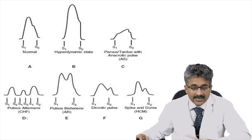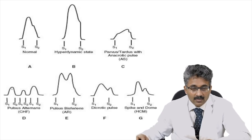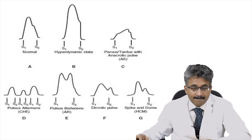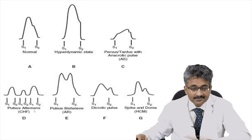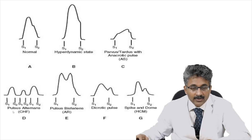In the next diagram, there is alternating one big pulse and one small pulse — this is pulsus alternans. Pulsus alternans is a feature of left ventricular failure. It can also be seen in aortic regurgitation, hypertension, and hypotensive states.